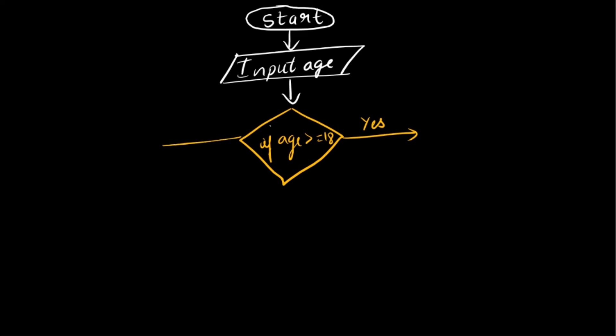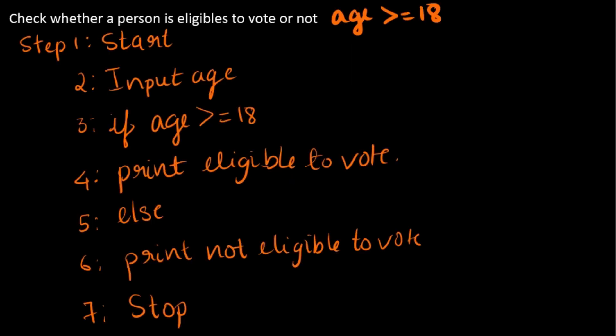If this is yes, and if this is no, let's check what is the case. If this is correct, then print eligible to vote.